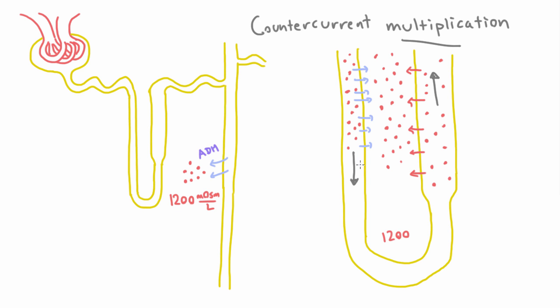And keep in mind that the water here is equalizing all the way down into the deepest part of the medulla, which means that the concentration here at the very bottom of the loop of Henle is also going to be about 1200. Okay, so that is countercurrent multiplication.